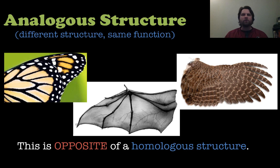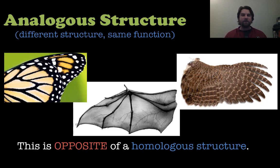Now analogous structures are the opposite of homologous structures — the structures are different but they have the same function. For example, the wings of a butterfly, a bat, and a bird are very different structures but all help the organism fly. Remember: analogous structures are different structure, same function — the opposite of homologous structures.